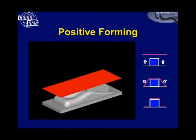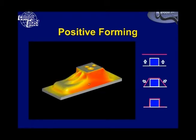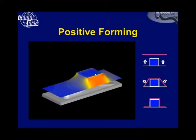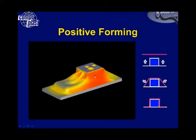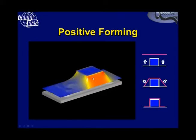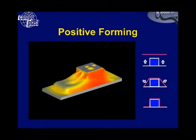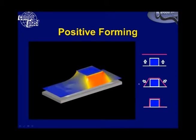To demonstrate some of the capabilities of the software, here we show positive forming where the tool starts off below the sheet centerline and is pushed through the sheet, and then the vacuum comes on and pulls the material down onto the tool. The colors you see represent thickness — blue is thick and red is the minimum thickness. As you can see, the sheet starts off relatively blue and then starts to reduce in thickness during the forming.